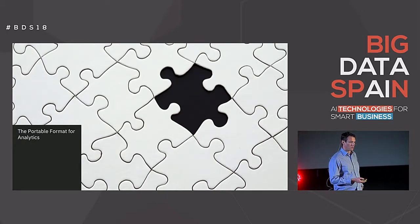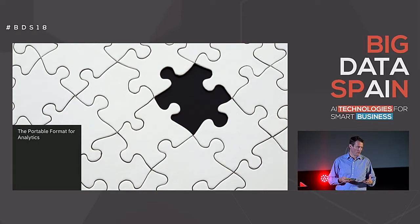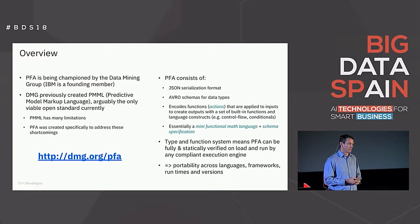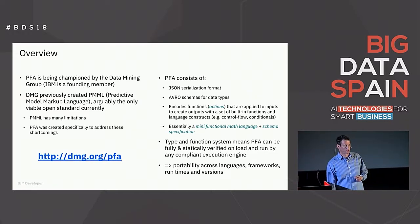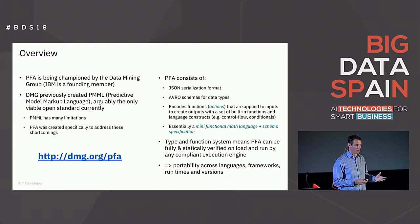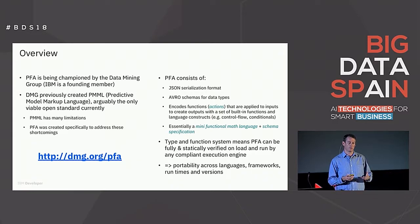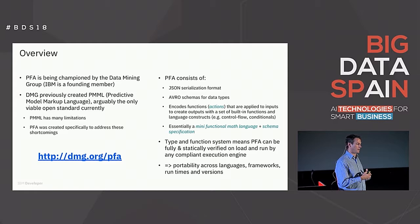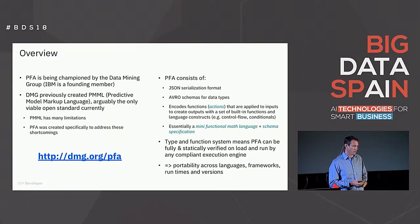On the formats issue and standardizing model formats, I'll talk about the portable format for analytics as a solution. PFA is being championed by the Data Mining Group, of which IBM is a founding member. The DMG previously created PMML — the Predictive Model Markup Language — an XML-based standard which is arguably the only real viable open standard in use today, with wide adoption for traditional machine learning applications. But PMML has many limitations: if a certain model or transformation is not baked into the spec, you simply can't use it. It's very difficult to extend things in PMML without a custom extension, and the minute you have a custom extension, you lose all the benefit of having a standard. PFA was created by members of the DMG specifically to address these shortcomings.